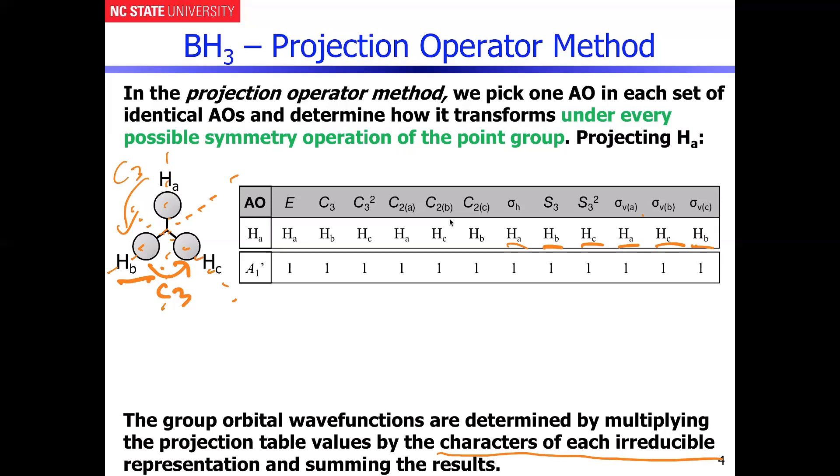So you can kind of see the net result of this. It's basically HA times one gives you HA. HB times one gives you HB. HC times one gives you HC. And then HA times one gives you HA. HC times one gives you HC. And HB times one gives you HB. And I don't think I need to reiterate, but that's what you're doing all the way across this entire series here.